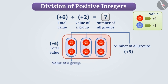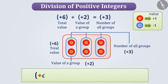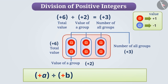The value of each group will be plus 2. We can say that there will be three groups of plus 2 in plus 6, that is, plus 6 divided by plus 2 is equal to plus 3. In broad terms, we can say that the quotient obtained by dividing any two positive integers is positive.